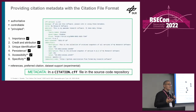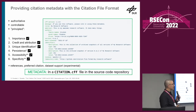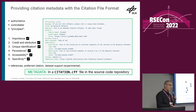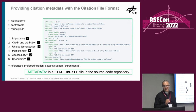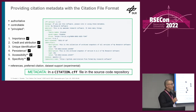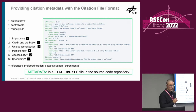What the citation file format set out to do is make it possible for people that create software to provide this information, because they are the only people that can actually do so. They're the only people that can say which team members contributed but haven't pushed anything to GitHub - they're still authors of the software. That's what I mean by authoritative. It's an authoritative format. It also makes the citation metadata controllable for the software authors because they can provide it together with the source code in the repository.